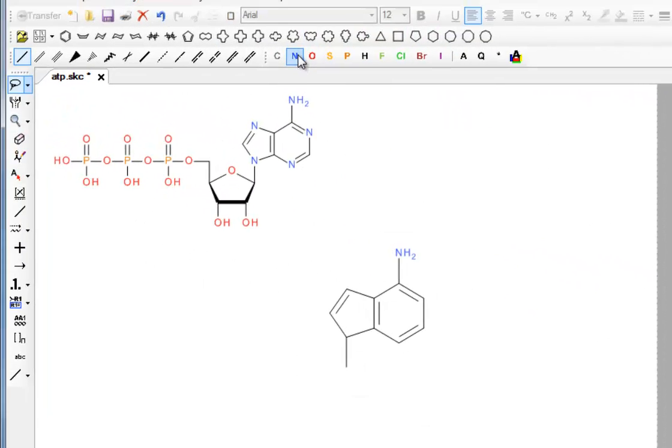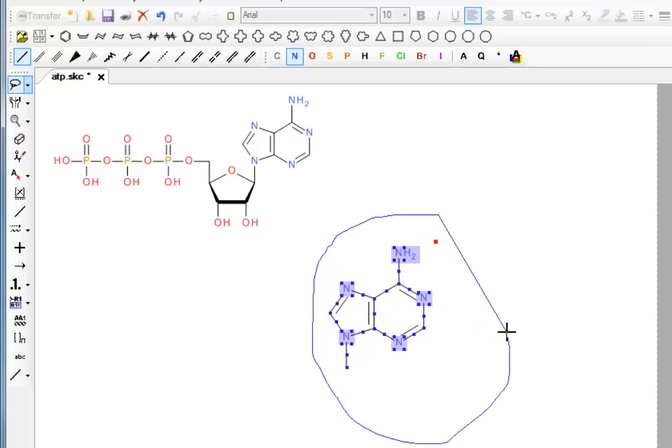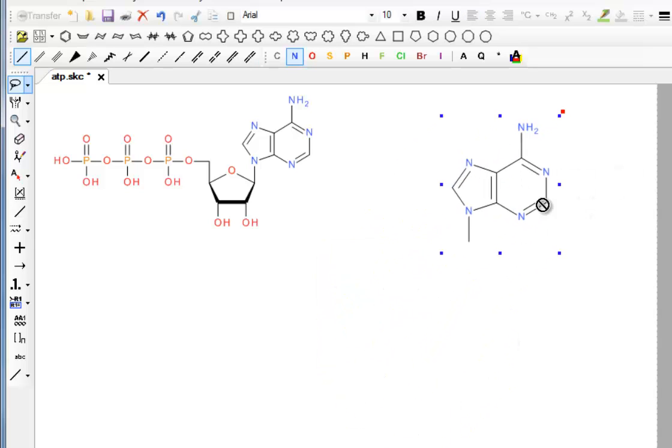I'll select nitrogen again and we'll put in the heterocyclic nitrogens. One there, one there, one there, and one there. That's the base completed, so we'll just move that out of the way.